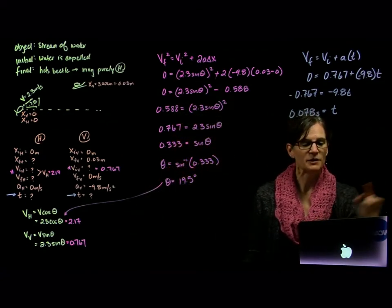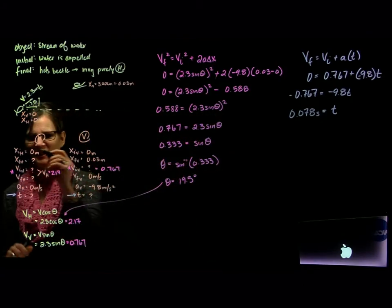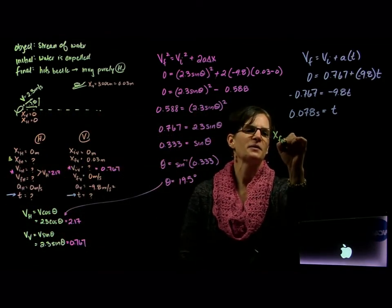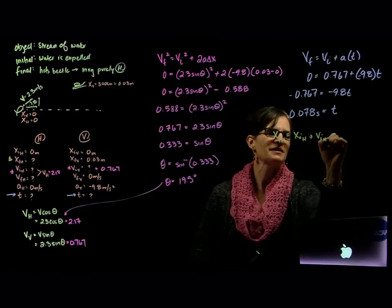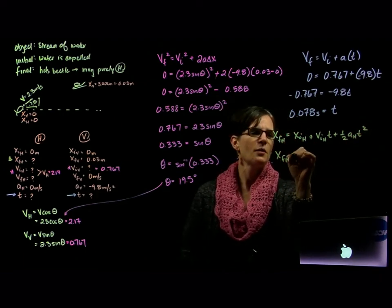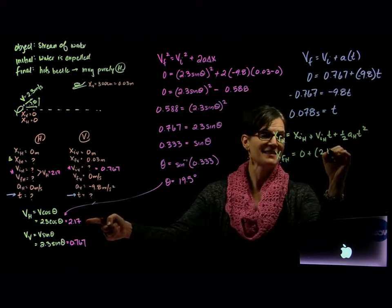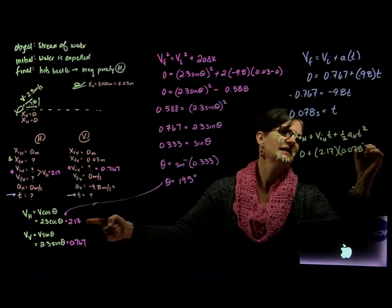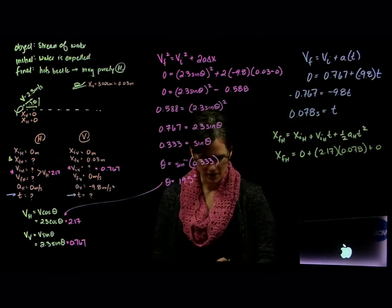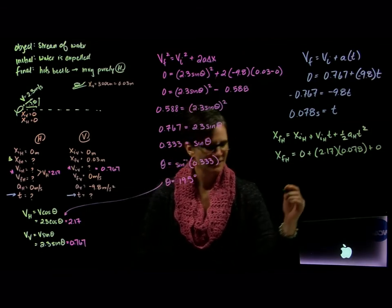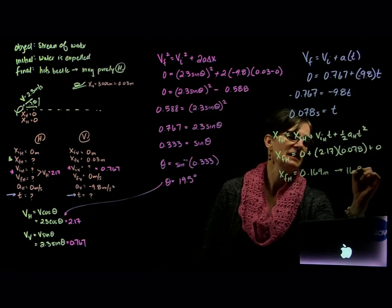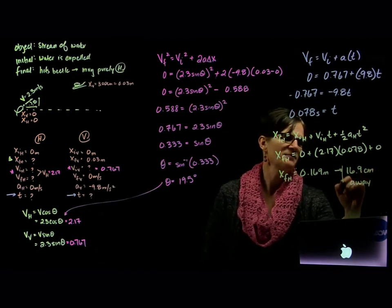The final question asks for the horizontal distance, which is x_final horizontal. Using x_final = x_initial + v_initial·t + ½·a·t² horizontally, with a_horizontal = 0, x_final horizontal comes out to 0.169 meters, or 16.9 centimeters away.